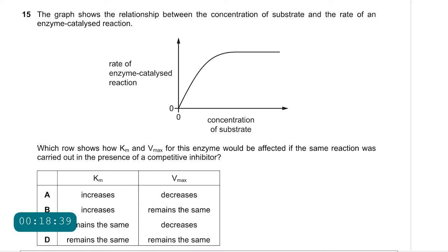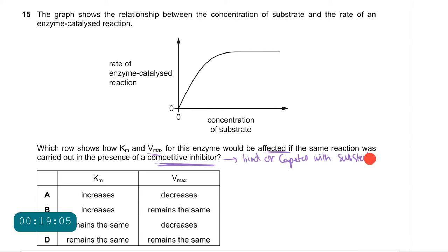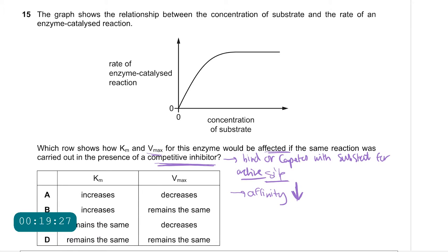Question 15: the graph shows the relationship between substrate concentration and rate of an enzyme-catalyzed reaction. How would Km and Vmax be affected by a competitive inhibitor? A competitive inhibitor binds or competes with the substrate for the active site. It is normal for the affinity of the substrate for the enzyme to decrease because there is now competition. As affinity decreases, Km increases because they are inversely proportional.